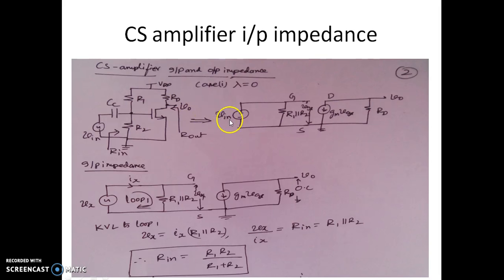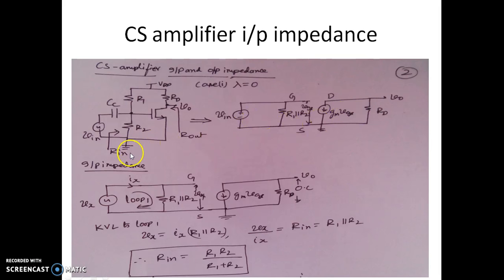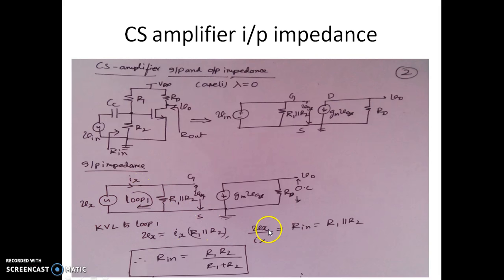Now we write the AC equivalent model. R1 and R2 are represented by a single resistor R1 parallel R2, and the MOSFET is replaced by its controlled current source. We assume lambda equals zero for this first case, so R0 is not included. To find the input impedance, since no load is connected the output is open circuit, and we apply a dummy source Vx. Writing the loop equation: Vx equals Ix times (R1 parallel R2). Therefore Vx/Ix, the input impedance, is R1 parallel R2, which equals R1·R2/(R1+R2).